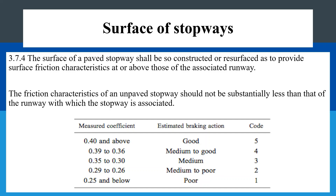Surface of stopways: the surface of a paved stopway shall be constructed or resurfaced so as to provide surface friction characteristics at or above those of the associated runway. The friction characteristics of an unpaved stopway should not be substantially less than that of the runway with which the stopway is associated. Whether the stopway is paved or unpaved, the friction characteristics should match that of the runway as closely as possible. You cannot have a runway with friction characteristics above 0.40 while the stopway's friction characteristics are below 0.29 — that is not acceptable.